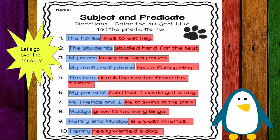Now that you have had some time to practice, let's go over the answers. The horse likes to eat hay. The horse is the subject. Likes to eat hay is the predicate.